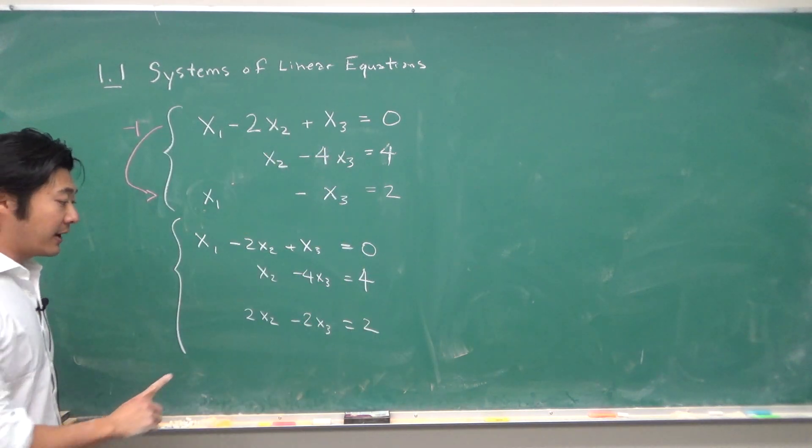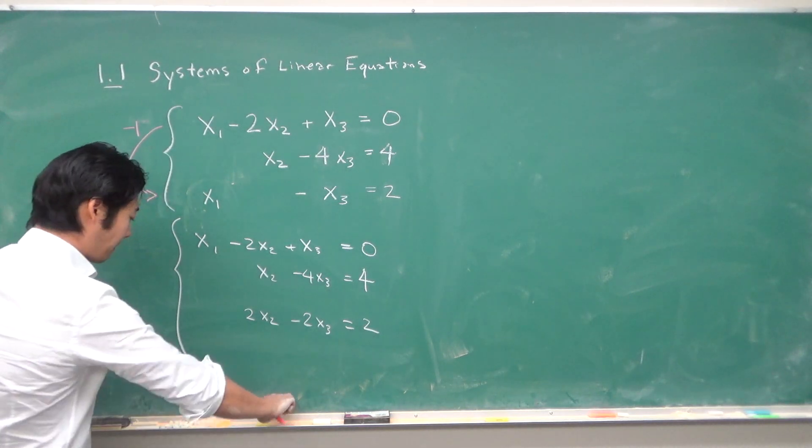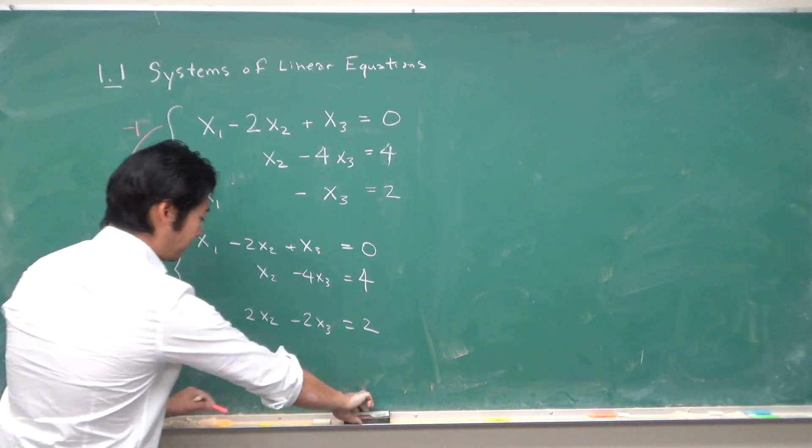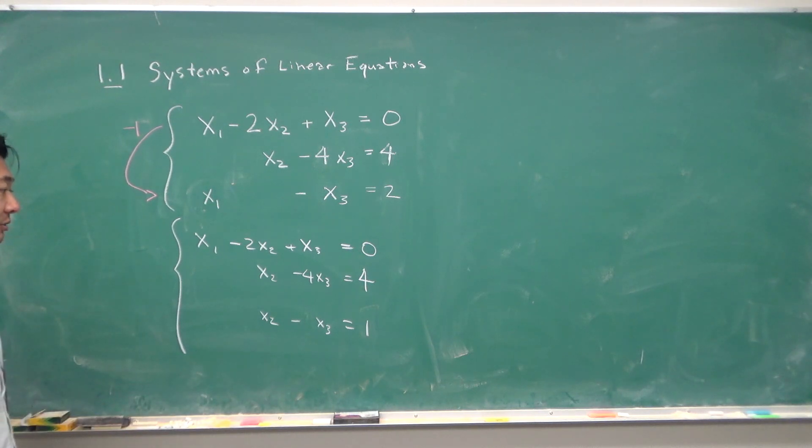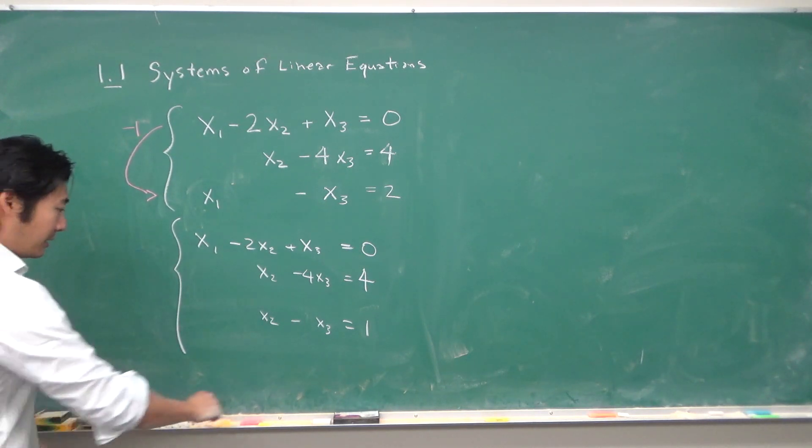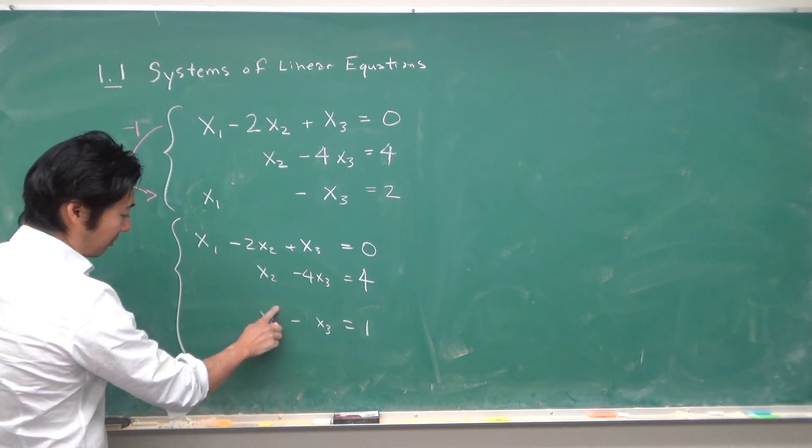Now we can divide this equation by 2 to make everything nice. So when we do that we get this equation. Now we can repeat the steps once more. So this time I want to get rid of this one.